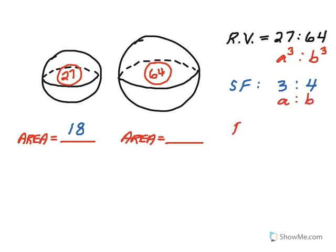Then the ratio of the areas of these two figures is A squared to B squared, which is 3 squared to 4 squared, or 9 to 16. Now I can set up a proportion.